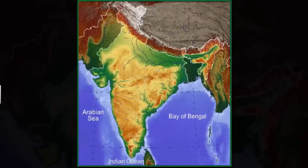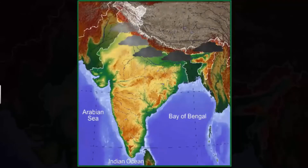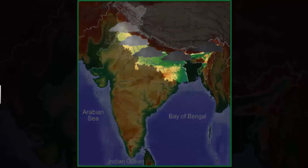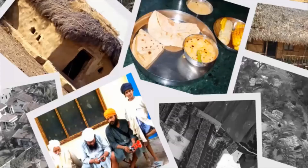There is a decrease in the rainfall generally from east to west in the Northern Plains. Climatic variations also affect the way people live, the food they eat, the clothes they wear, and the kind of houses they live in.